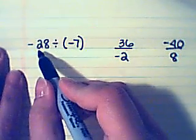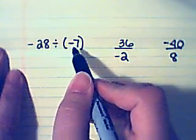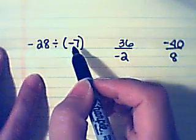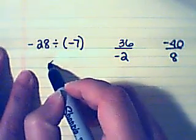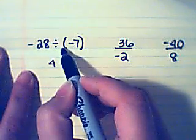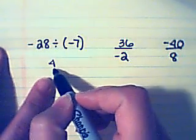Here we have negative twenty-eight divided by negative seven. Twenty-eight divided by seven is four. Since both signs are negative, your answer is positive.